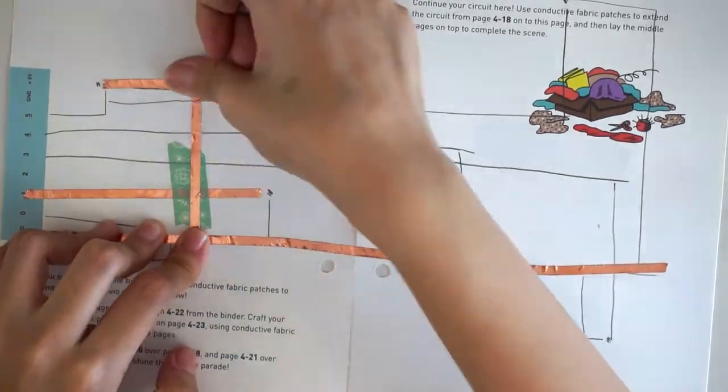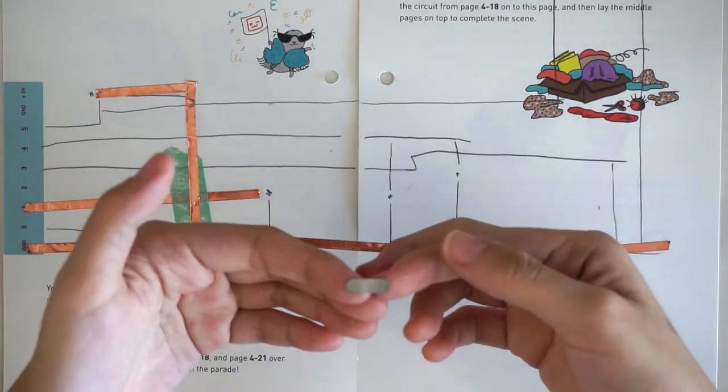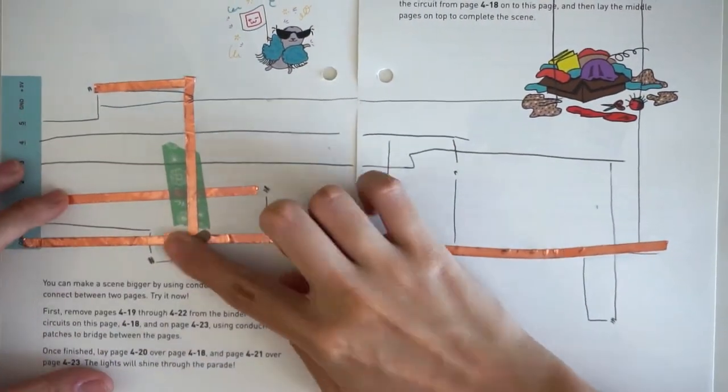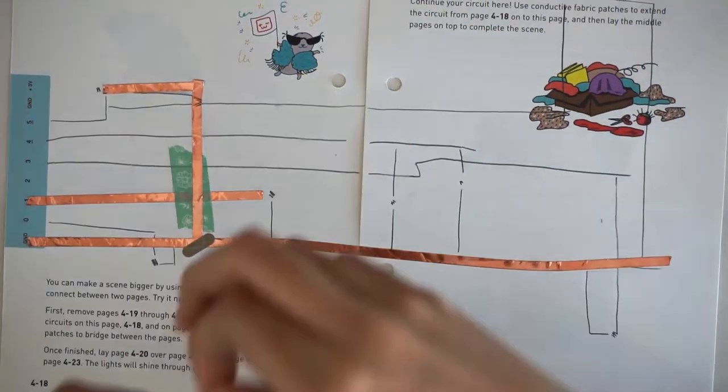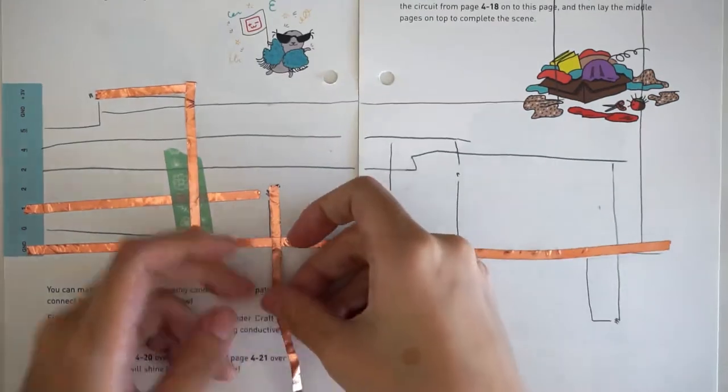Now we have a T-junction on the ground trace. T-junctions need a patch of conductive fabric tape over them to make them reliable. Let's add another ground trace, using a T-junction and another fabric tape patch.